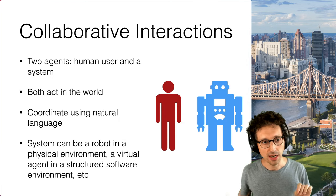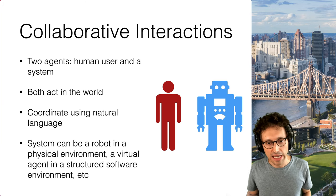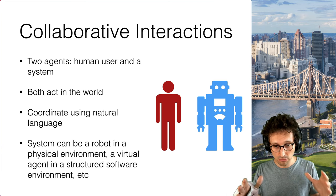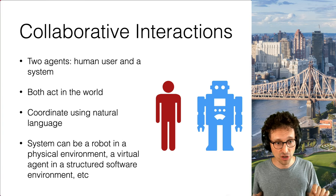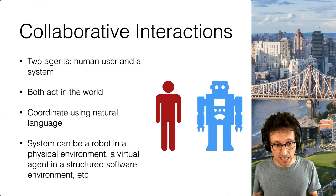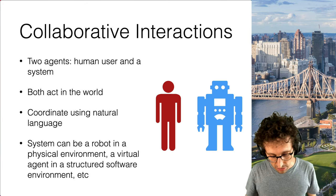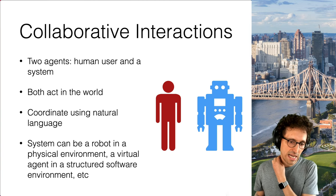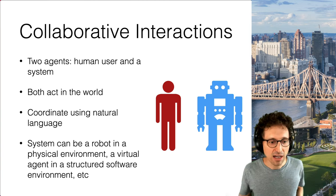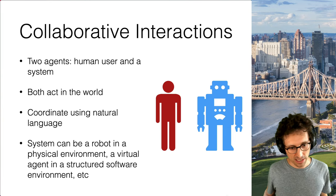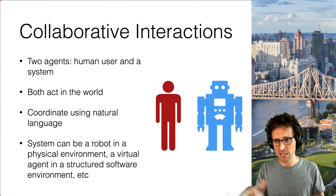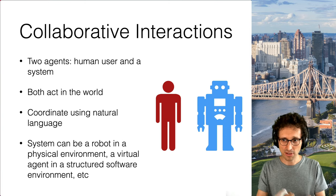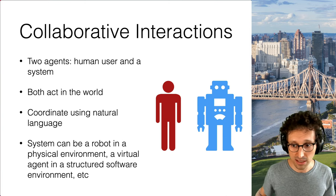The scenarios we're interested in have at least two agents: a human user and a system. These are collaborative scenarios where both agents act and change the world, and they coordinate using natural language. You can think of the system as a robot in a physical environment working alongside a human, or a virtual agent in a structured software environment — maybe building a spreadsheet together with a virtual assistant, delegating tasks and coordinating using natural language.